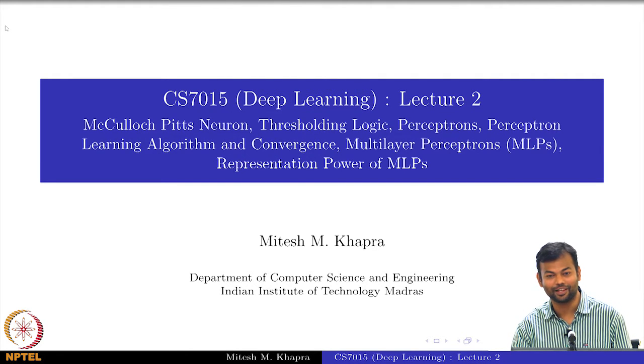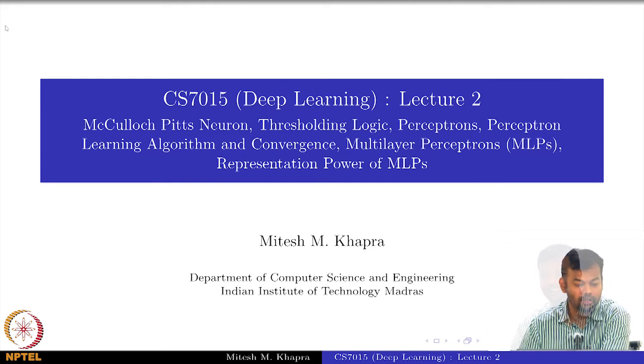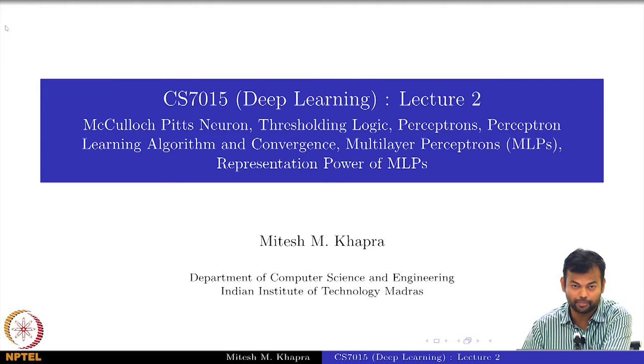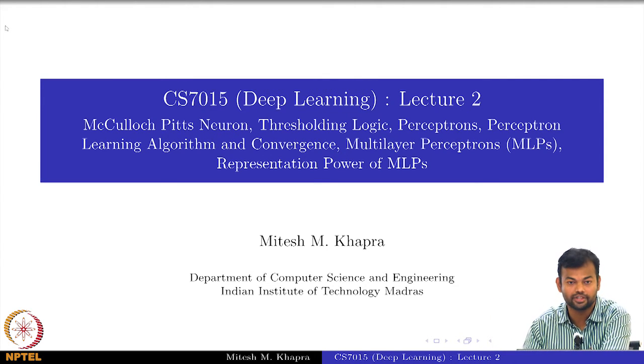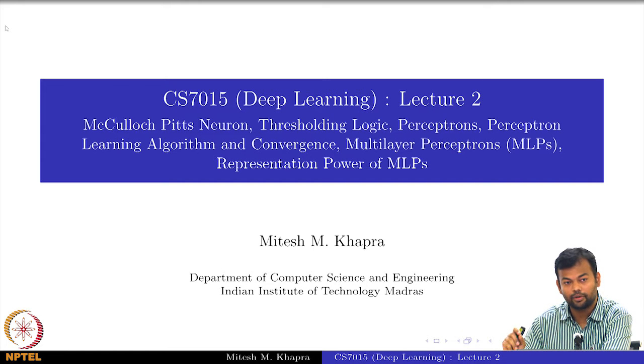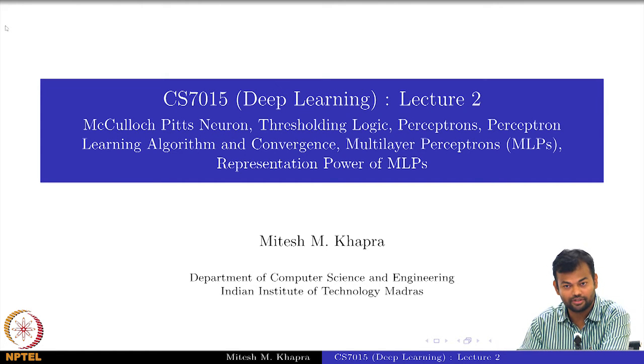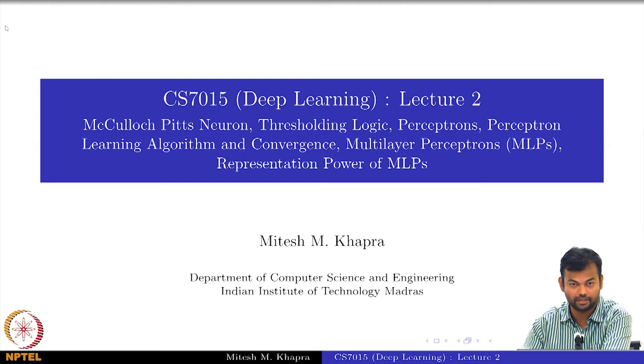Welcome to lecture 2 of CS7015, the course on Deep Learning. We will talk about McCulloch-Pitts Neuron, Thresholding Logic, Perceptrons and a Learning Algorithm for Perceptrons, talk about the convergence of this algorithm, then discuss Multilayer Network of Perceptrons and finally, the Representation Power of Perceptrons.